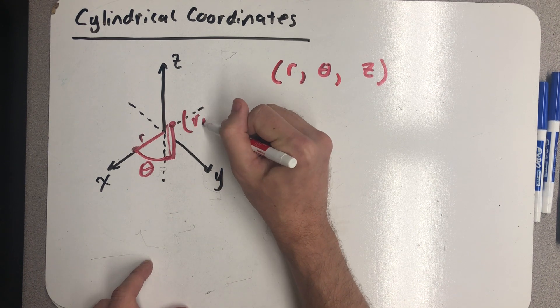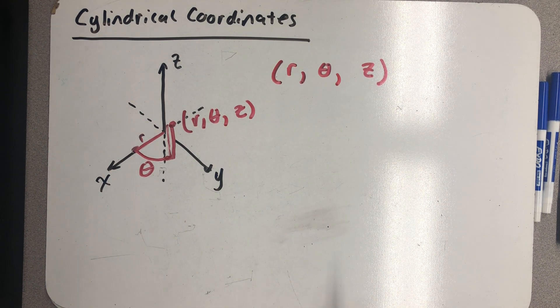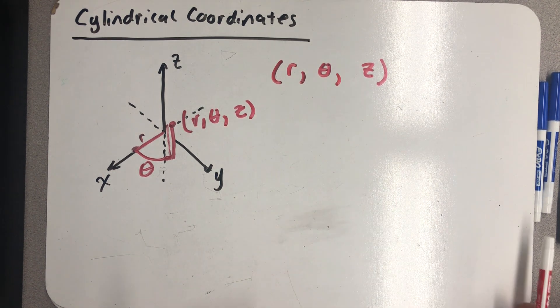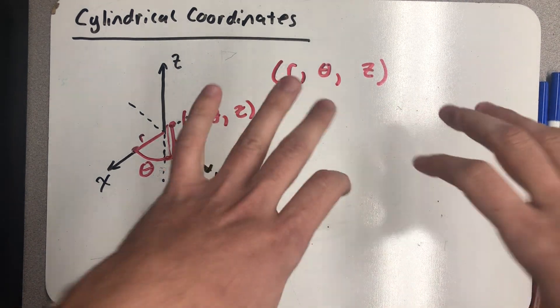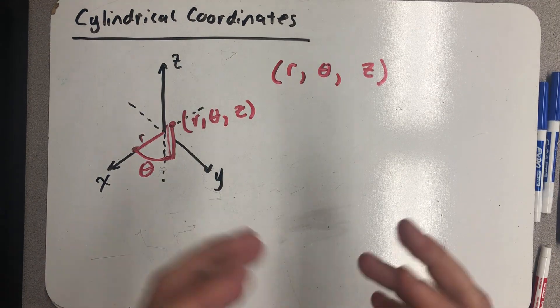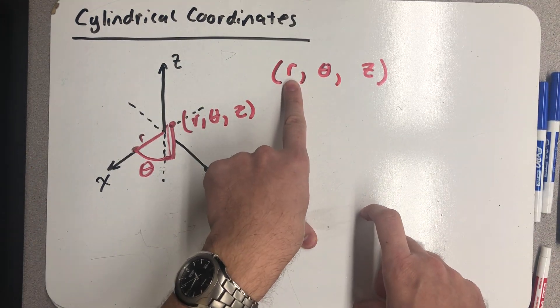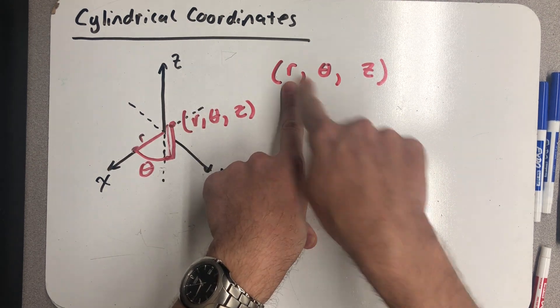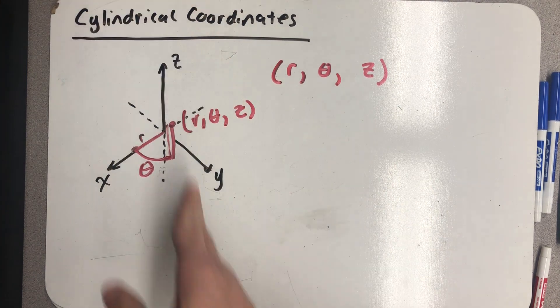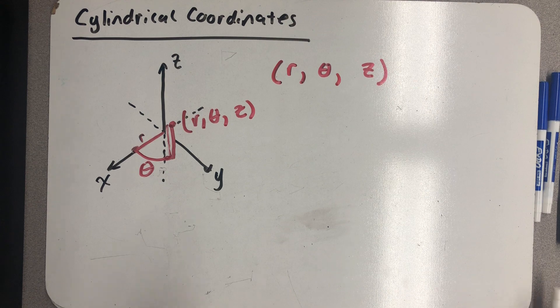So that would be the point r, theta, z. We call these cylindrical coordinates because establishing a radius r would be a circle in the xy plane but since I have heights those would be right circular cylinders. So I can actually think about this as identifying a cylinder in space that I'm on, rotating to a particular angle in that cylinder, defining a vertical line I'm on, and then finding the exact spot I am on that cylinder.